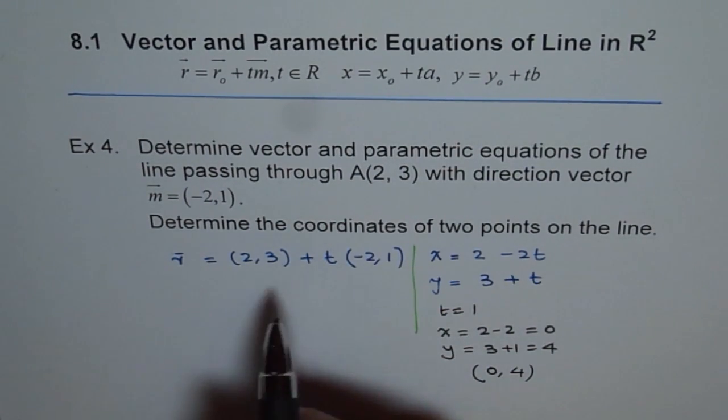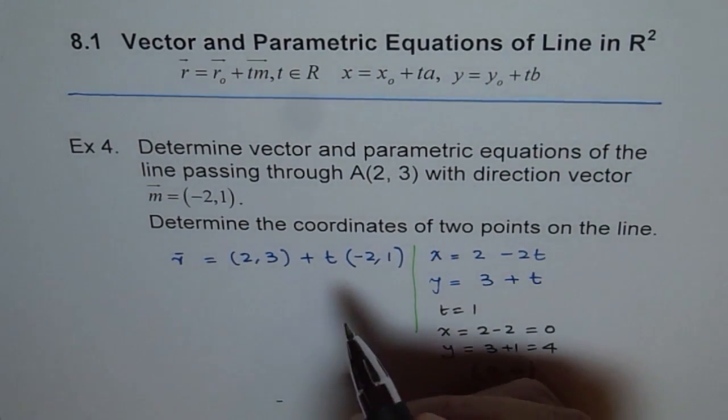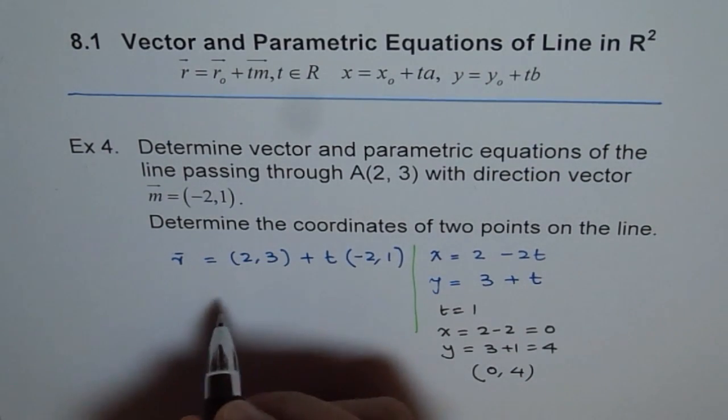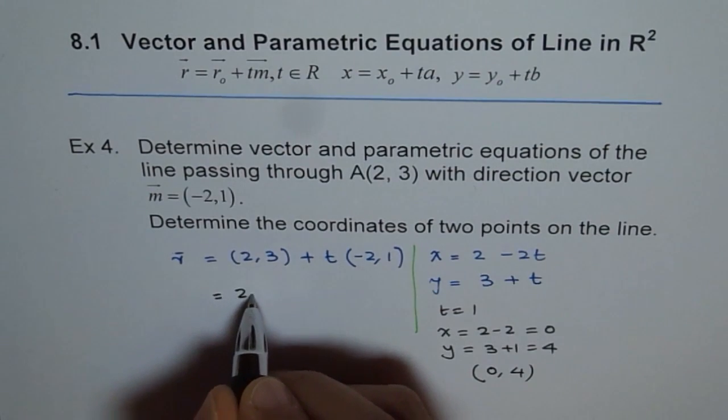And here, we'll give you a second point from the vector equation. We can take T as some value, let's say T is 3. It doesn't matter, we can take any value. So in that case, our point will be (2,3) plus, we are taking 3 as T value and we say (-2,1).